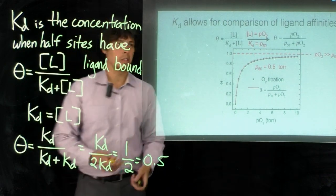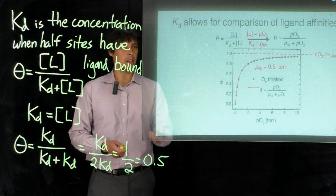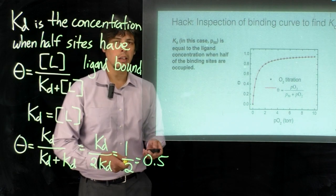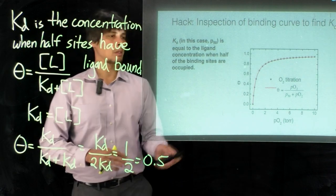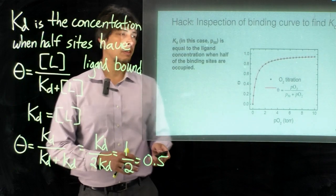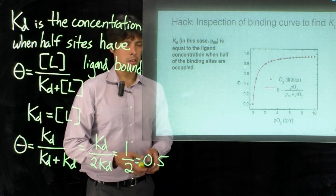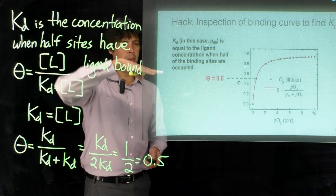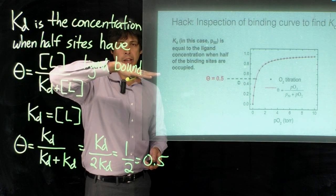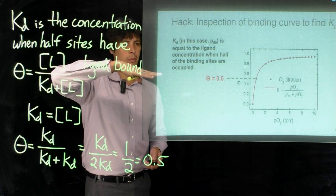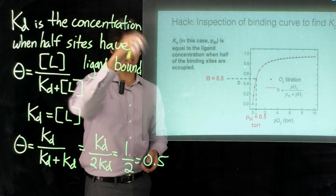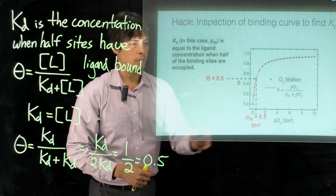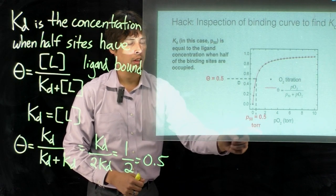And so that's really useful because then if we have a ligand binding curve like this we can actually very easily determine what KD is just by inspection. So for instance, this is the same ligand binding curve that I've been showing you the last couple of slides. If we set theta equal to 0.5 and we project a line onto 0.5 and then we project a line from that point down to the x-axis, this line that projects across the x-axis will now cross the concentration that represents the KD.